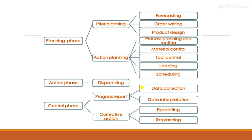This picture shows a diagram of the complete production planning and control phases. There are three phases. The first phase is planning, which comprises two sub-phases: prior planning and action planning. Prior planning is done first, and action planning involves actions taken at the time of production. The second phase is the action phase, in which we dispatch.